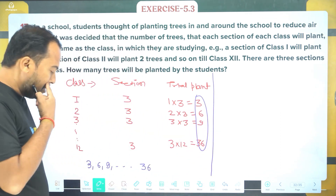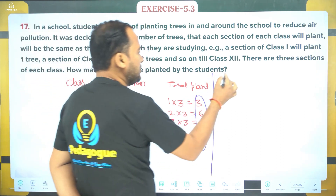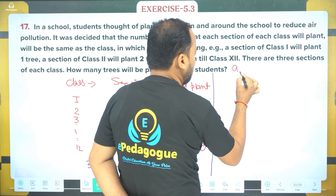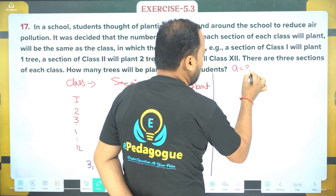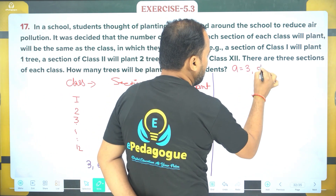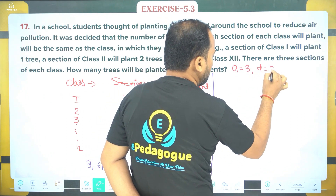Now here the first term 'a' we can easily identify: a = 3, and the common difference d = 3.